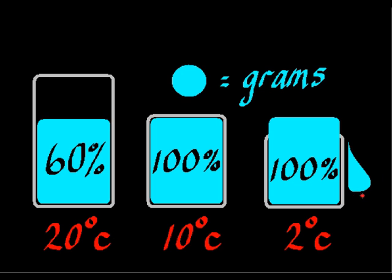Precipitation forms in the form of dewdrops, fog, rain, snow, etc. In other words, as we decrease the temperature, when the amount of water which that parcel of air is able to hold becomes less than the actual amount of water in the atmosphere, then water droplets form — condensation, rain, snow, etc.